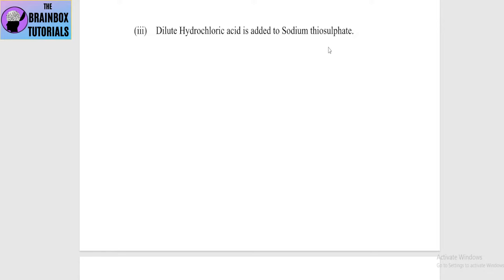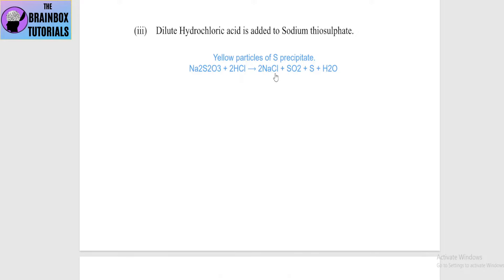Next: dilute hydrochloric acid is added to sodium thiosulfate. When dilute HCl reacts with sodium thiosulfate, sulfur particles are precipitated as a yellow color. The reaction: Na2S2O3 + 2HCl → 2NaCl + SO2 + S + H2O. Sulfur dioxide gas is released, but importantly the yellow sulfur particles precipitate out.